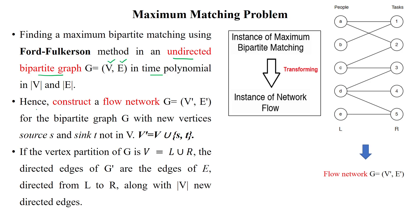For solving the bipartite graph to find maximum matching, we have to construct a flow network using the Ford-Fulkerson algorithm. The flow network will have a set of vertices represented as V' and a set of edges represented as E' for the bipartite graph G.